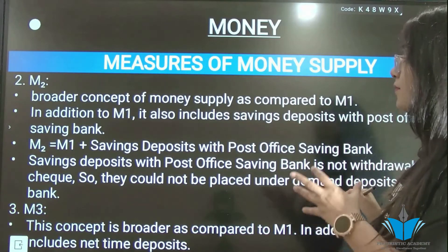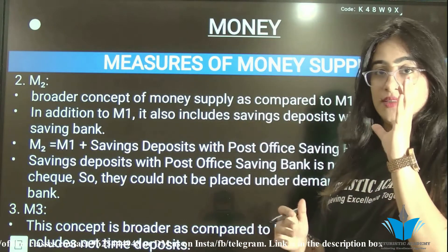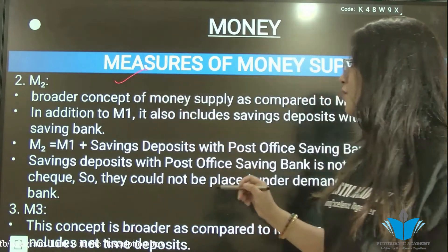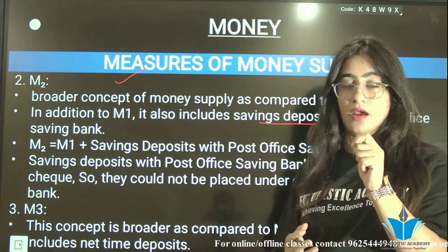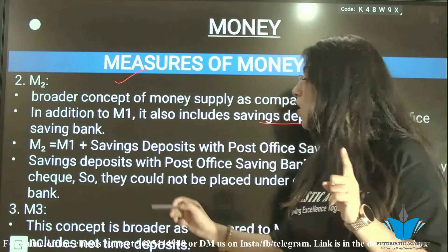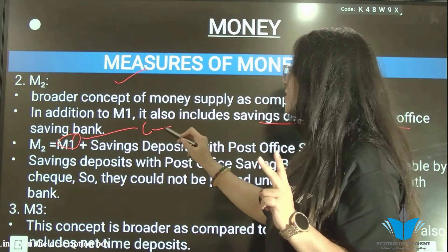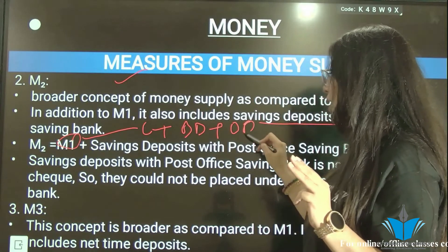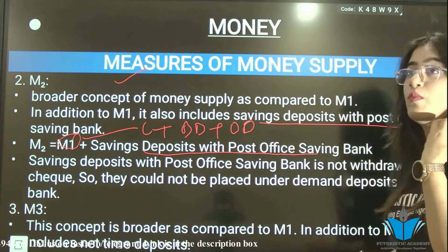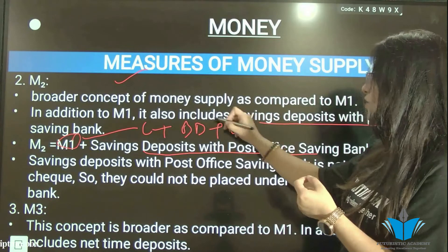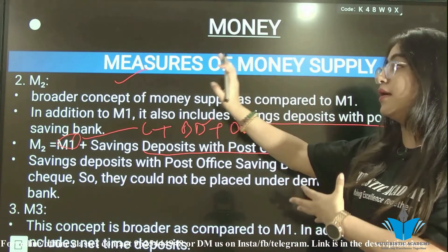M2 is a slightly broader concept than M1. M2 equals M1 plus saving deposits with post office saving banks. If you have a savings account in a post office, it comes under M2. Post office saving deposits cannot be withdrawn by cheque like demand deposits can, which is why they are not included in M1 and have a separate measurement.